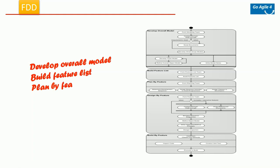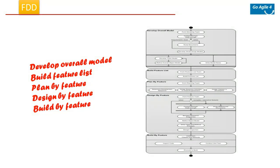FDD stands for Feature Driven Development. It is also an incremental approach; the emphasis is on building client-valued functionality through repeatable delivery of tangible software. It was first developed at a Singapore bank and evolved into five processes: develop overall model, build feature list, plan by feature, design by feature, and build by feature. It's mostly revolving around features, which is the functionality.